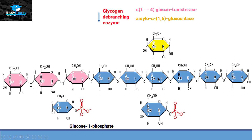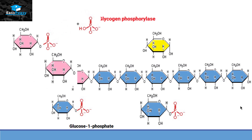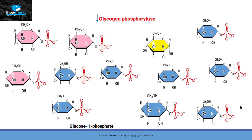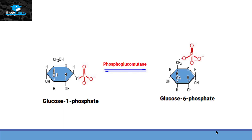Now this chain is again available to glycogen phosphorylase, which starts removing each glucose molecule again, making glucose-1-phosphate until it reaches another limit dextrin. So the compound we were breaking will be progressively reduced. The next step is that glucose-1-phosphate will convert itself into glucose-6-phosphate. With the help of an enzyme called phosphoglucomutase, it is nothing but the phosphate molecule changing its location from carbon number 1 to carbon number 6.